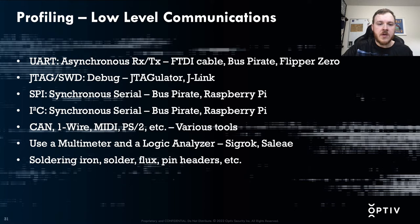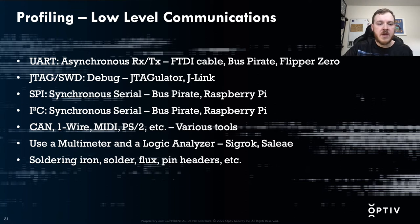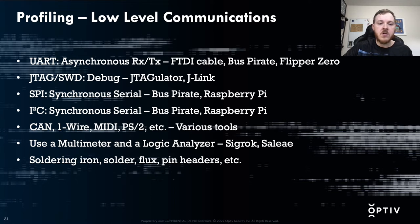JTAG and SWD are debug protocols — you can inventory the primary CPUs on a board with JTAG and do real-time debugging with SWD. A lot of times you can pull the firmware with JTAG as well. The tool I use most often to identify JTAG pins is the JTAGulator, and then the SEGGER J-Link to interface with JTAG. SPI and I2C are synchronous serial communications with their own clock signal and can be daisy-chained. I generally use a Bus Pirate for SPI, but a Raspberry Pi or Arduino also work. For less common protocols like CAN, OneWire, MIDI, and PS/2, you'll want to Google the best tool for the job.